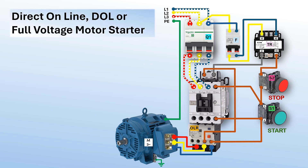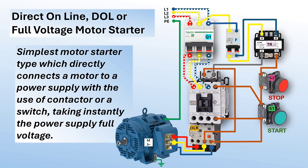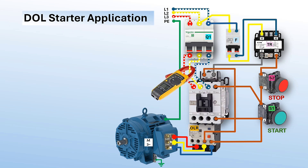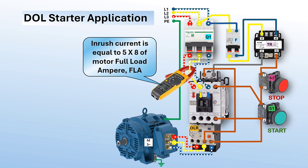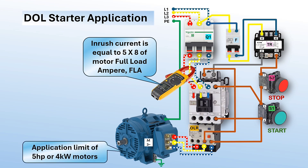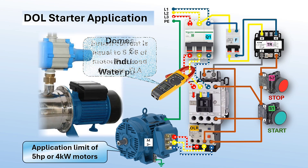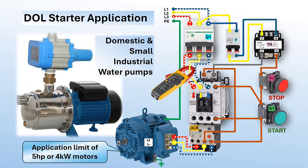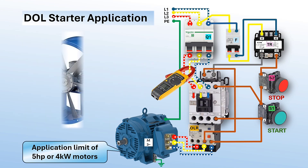What is a direct online motor starter? Considered the most simple motor starter option, direct online or DOL is a full voltage motor starter through a switch or a contactor. This starter instantly connects a motor to the power supply. This full voltage connection can cause the motor to draw an inrush current of five to eight times its normal operating current, making DOL starters generally applicable with low-rated motors under five horsepower or four kilowatts. This type of starter is commonly used to start small domestic water pumps, conveyor belts, fans, and compressors.